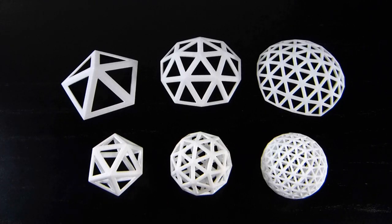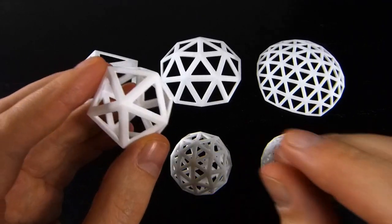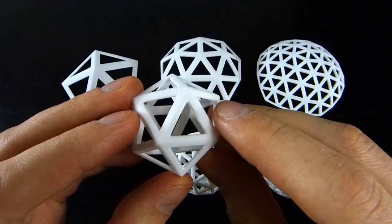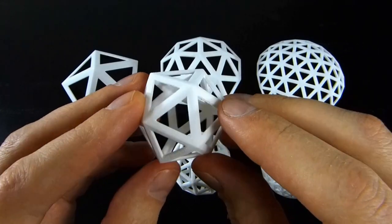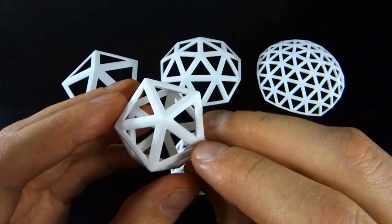So suppose you want to make a polyhedral approximation to a sphere. There's lots of different ways to do this, and this is maybe one of the simplest ways to go. Start with an icosahedron, which is in some sense the most spherical of the regular polyhedra.